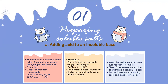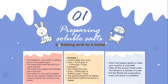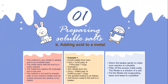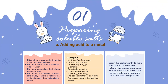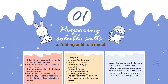Preparing soluble salts by adding acid to a metal — this method is similar to adding acid to an insoluble base. The metal reacts with the acid by a redox reaction, and the metal ion replaces the hydrogen ion in the acid. Very reactive metals such as sodium are not used because the reaction is too violent.